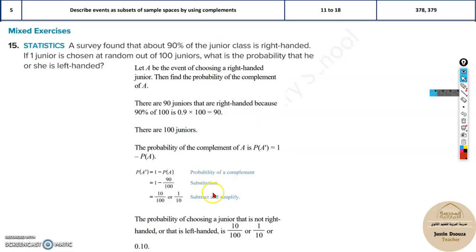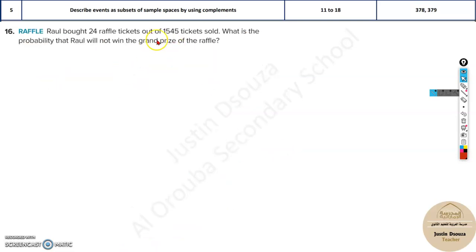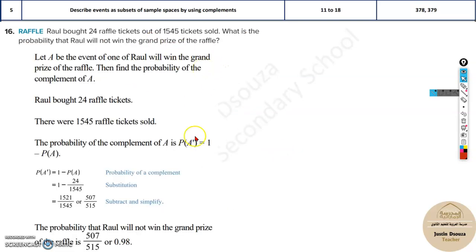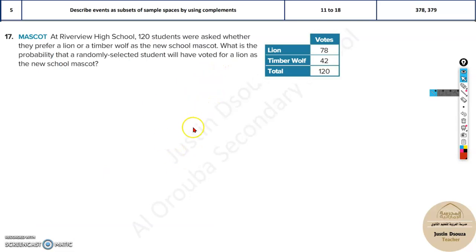Now these are all similar, and sometimes you don't even need to solve this. For example, a survey found that about 90% of the junior class is right-handed. If one is chosen at random out of 100, what is the probability that she is left-handed? So 90% are right-handed. How many are left-handed? 10, or 10%. That is 0.1. You can just look into it and solve it easily.